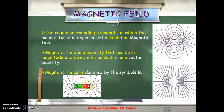The bar magnet has some important characteristics. It consists of two poles: south and north pole. These two poles can never be separated from each other. A freely suspended magnet lies in the north-south direction, and it has the ability to attract small pieces of magnetic substances like iron, cobalt, and nickel.